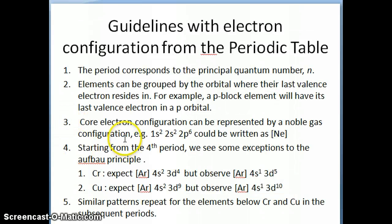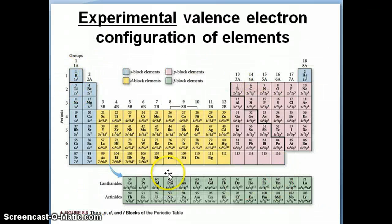I want to point out a couple more additional guidelines you can use when writing electron configuration from the periodic table. Just remember that the period in the periodic table, which is the rows that you have, corresponds to the principal quantum number. If you look at a periodic table, this is the first period, this is the second period, this is the third period element, fourth period, et cetera. But each one of this really corresponds to the principal quantum number. So this is n equals one, this is n equals two, n equals three, et cetera.